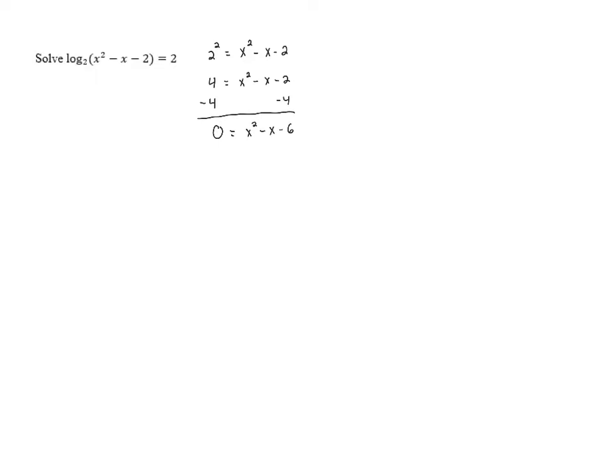And we can solve this by factoring using the unfoiling method. We need 2 numbers that have a product of negative 6 and a sum of negative 1. Those numbers are negative 3 and positive 2. And when we set each of those equal to 0, we get 2 solutions.